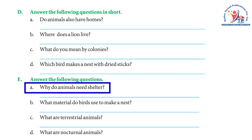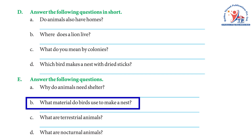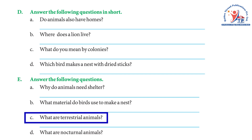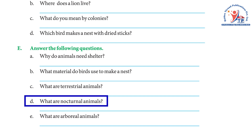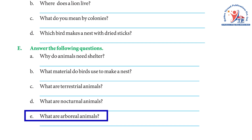Exercise E — Answer the following: (a) Why do animals need shelter? — Animals need shelter to protect themselves from enemies and bad weather, and to raise their young ones. (b) What materials do birds use to make a nest? — Birds use dry grass, leaves, twigs, cotton, and thread. (c) What are terrestrial animals? — Animals that live on land. (d) What are nocturnal animals? — Animals that are active at night. (e) What are arboreal animals? — Animals that live on trees, for example monkeys and chimpanzees.